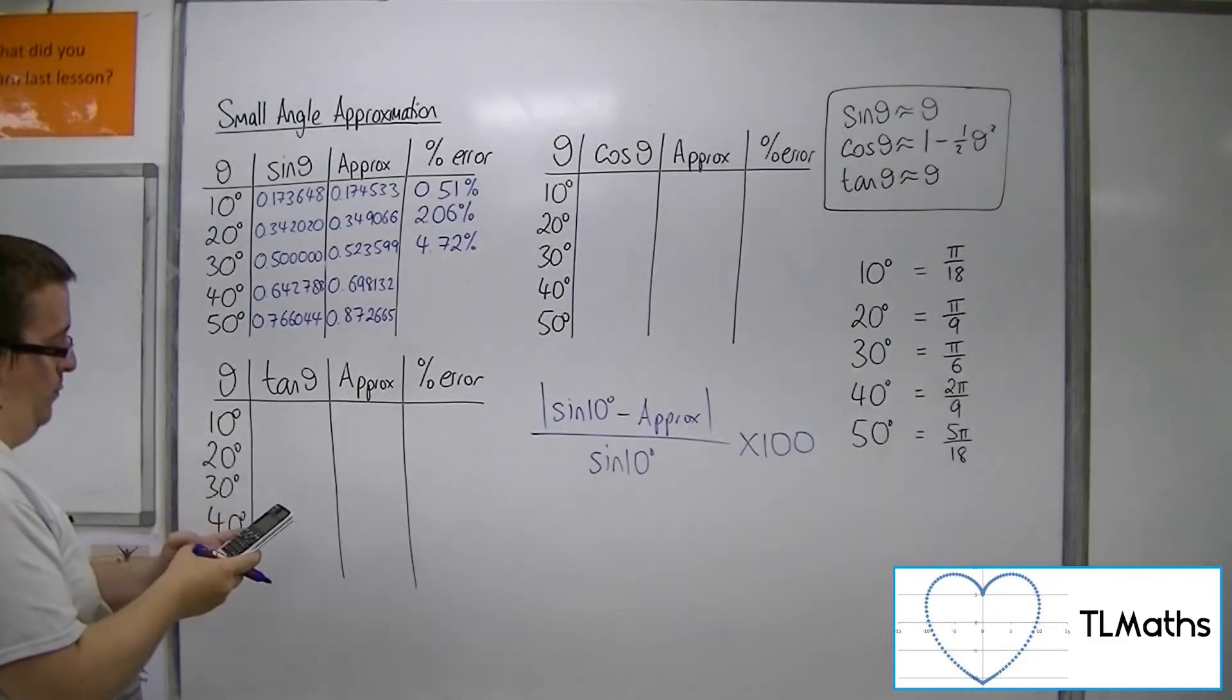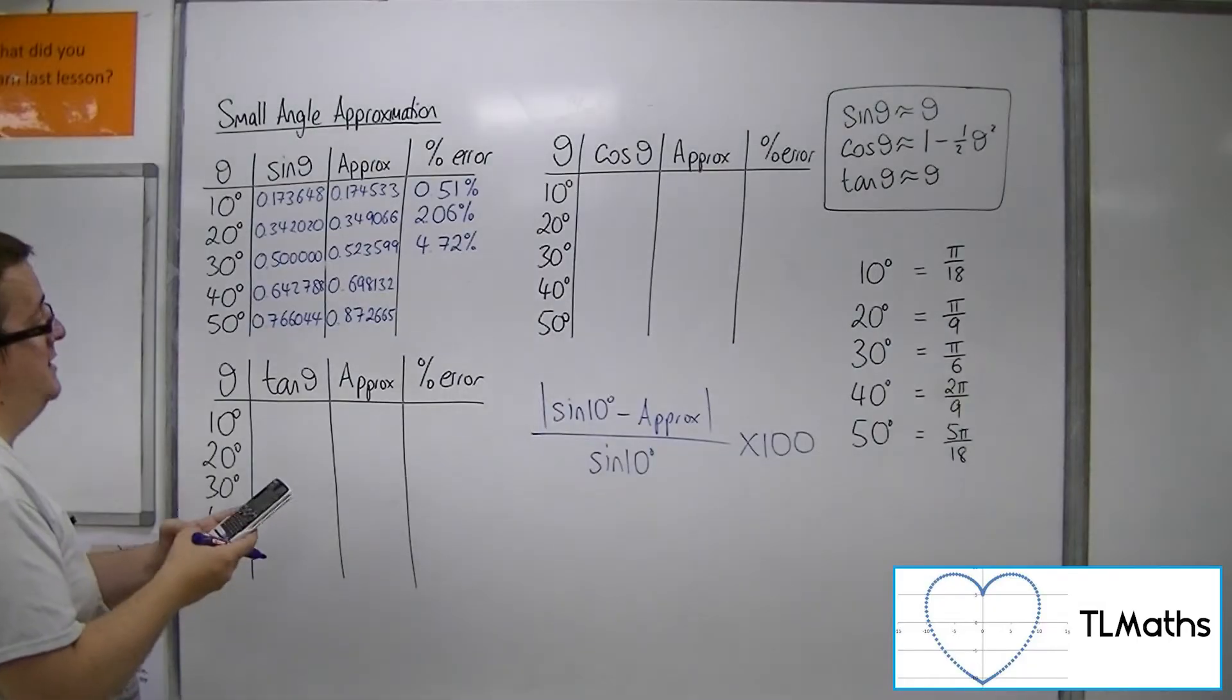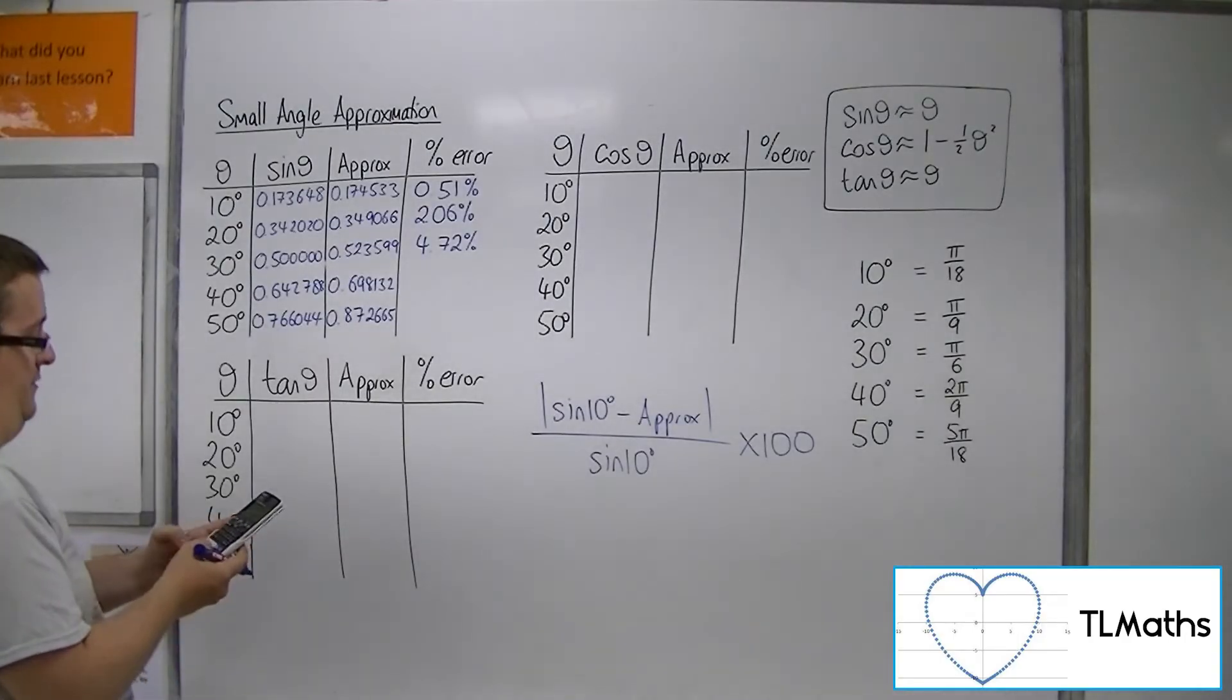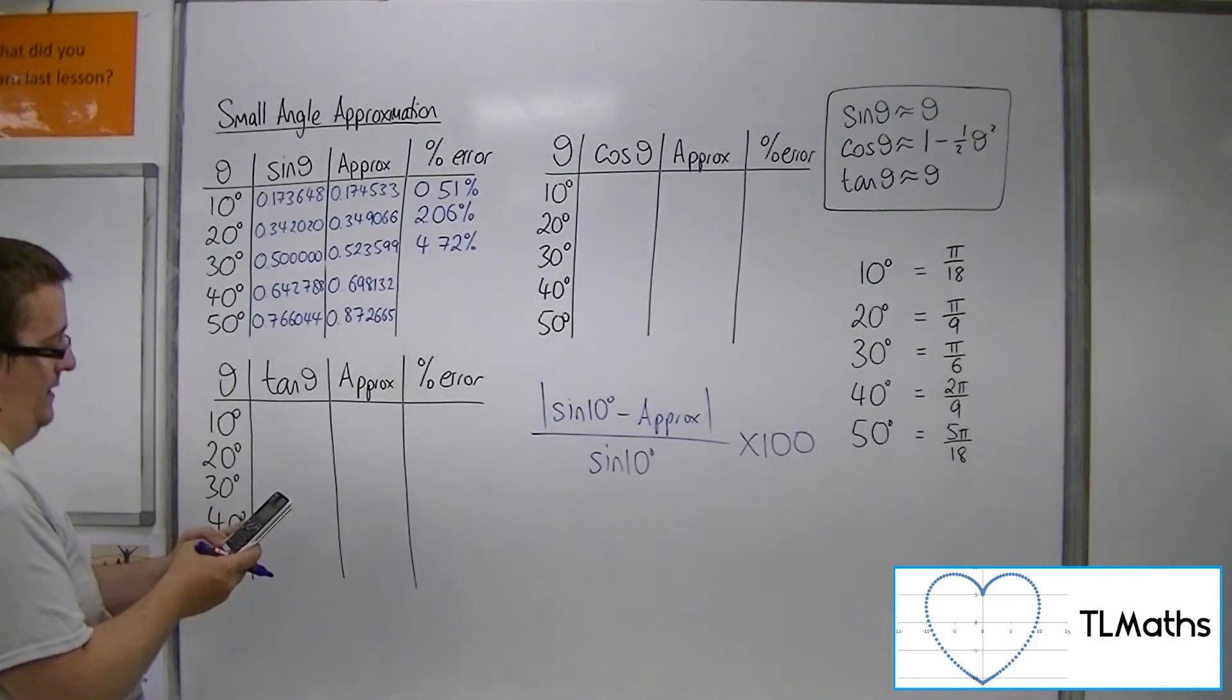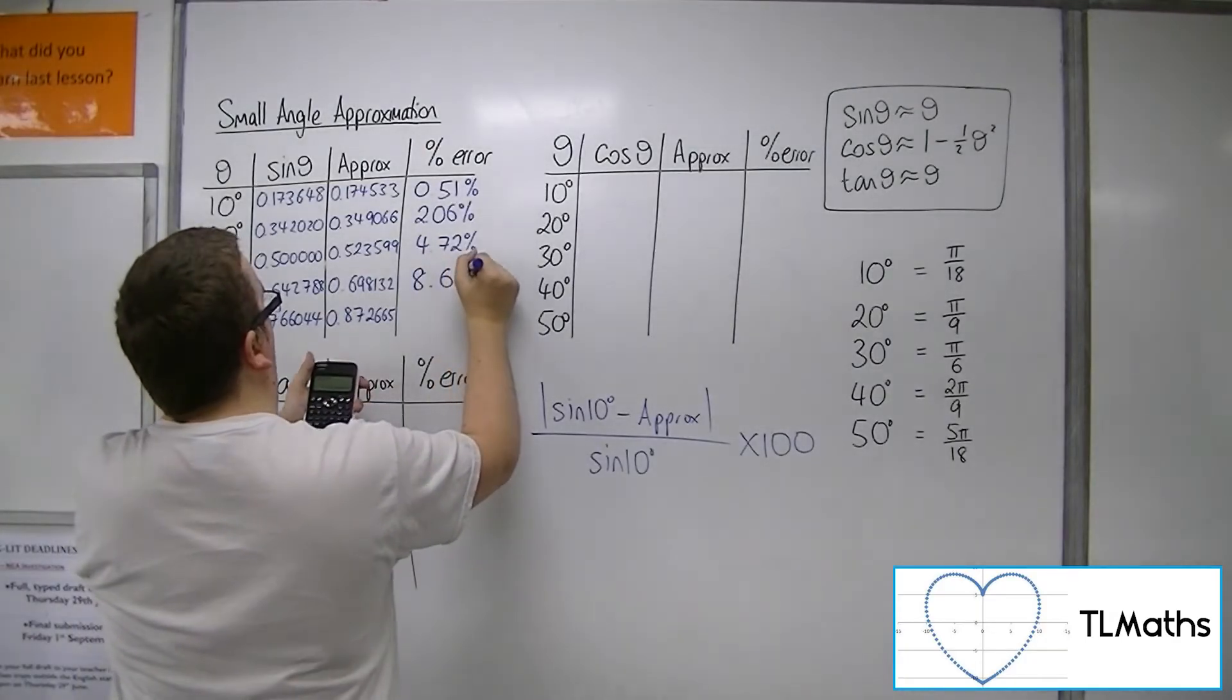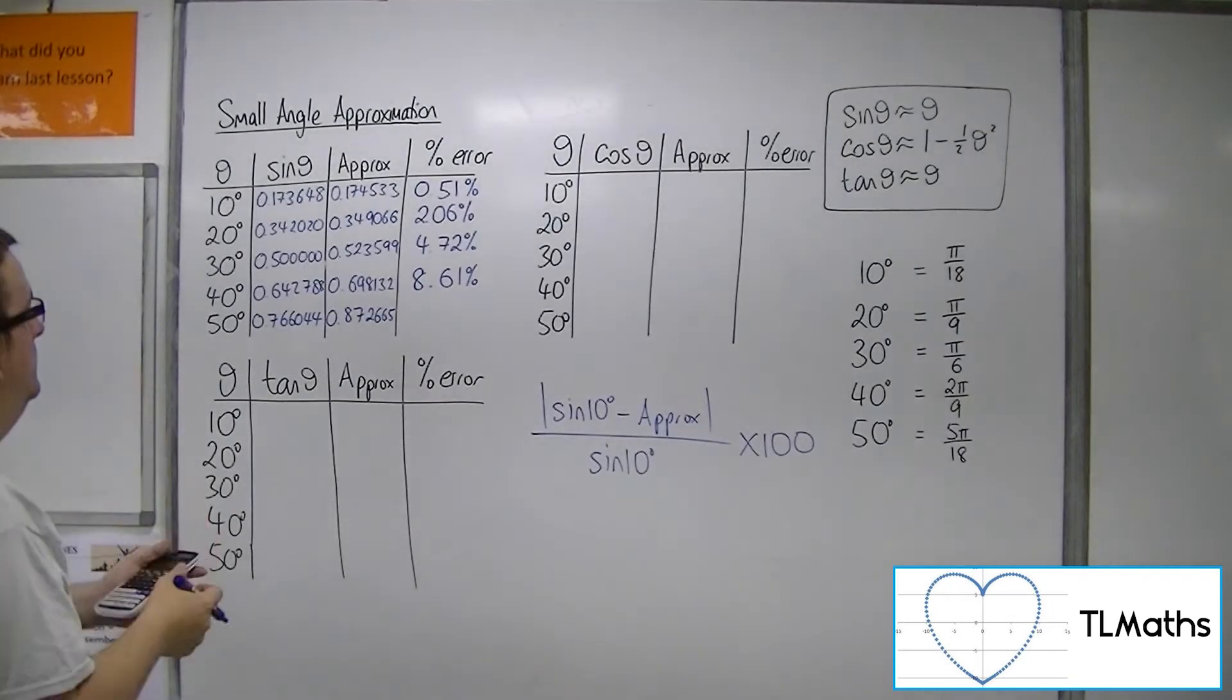Then the next one, 0.642788, take away 0.698132, times that by minus 1 to make it positive. Divide by the original, 0.642788, then times by 100. That gets me 8.61%. So we're up to 8.5% error.